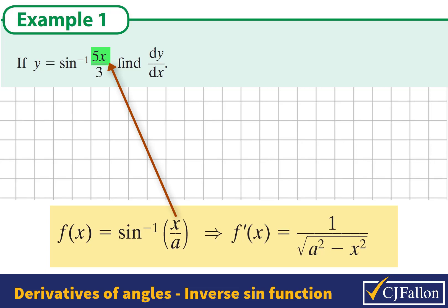We're going to treat 5x as if it is the x in our formula, and our denominator is 3, so that will be our a. Then we'll get the derivative of the inside, 5x, at the end and multiply it.